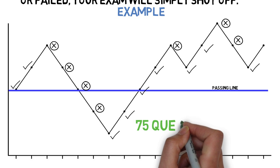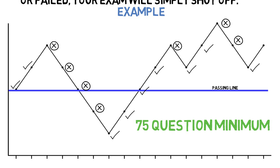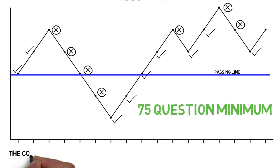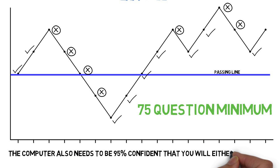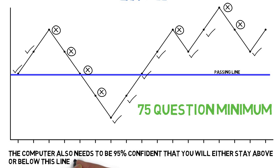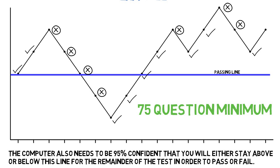The minimum number of questions every writer takes is 75. At this point you are evaluated to see if you are above or below the passing line. The computer also needs to be 95% confident that you will either stay above or below this line for the remainder of the test. After 75 questions, each and every question is evaluated the same way. Once the computer is 95% positive you have passed or failed, the test will simply turn off.